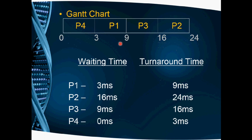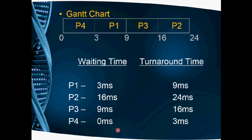In SJF, the process with the smallest burst time is always executed first. Like FCFS, we find the waiting time and turnaround time. For P1: starting time is 3, so waiting time is 3; ending time is 9, so turnaround time is 9. For P2: starting time is 16, so waiting time is 16; turnaround time is 24. For P3: starting time is 9, so waiting time is 9; turnaround time is 16. For P4: starting time is 0, so waiting time is 0; turnaround time is 3. You then average these values to get average waiting time and average turnaround time.